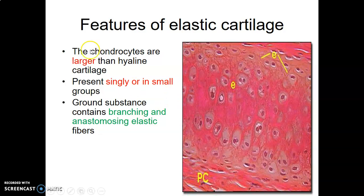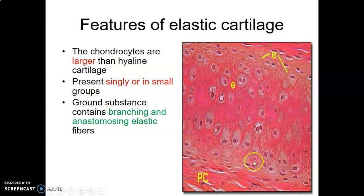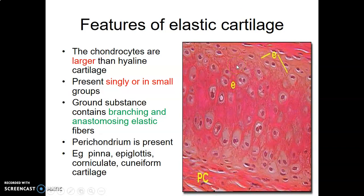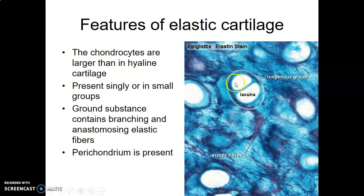The elastic cartilage cells are larger than what we saw in hyaline. Cells are most of the time single or in small groups — not like hyaline where you have isogenous groups of two to six. And in the ground substance you can see branching and anastomosing elastic fibers. Does elastic cartilage have perichondrium? Yes, it does. Elastic cartilage is found in the pinna, the epiglottis, and two cartilages of the larynx — the corniculate and cuneiform. Remember, hyaline cartilage is in thyroid, cricoid and arytenoid, while elastic is in corniculate and cuneiform.